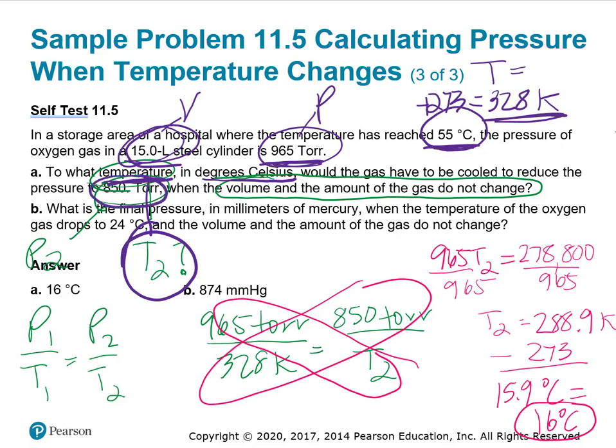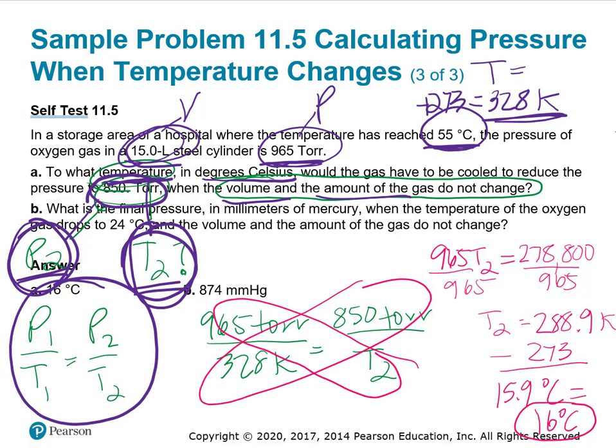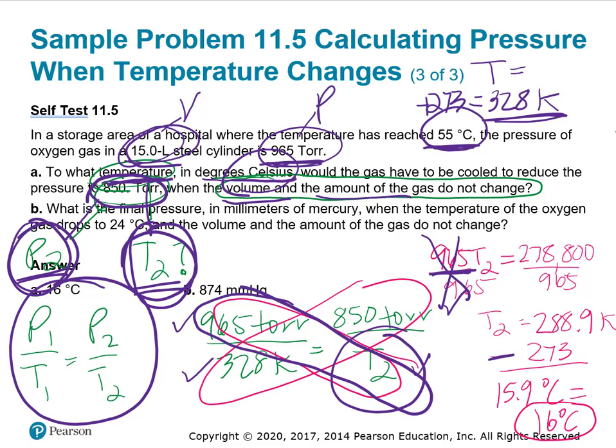To what temperature in degrees Celsius would the gas have to be cooled, so we need to find T2, to reduce the pressure to 850 torr? We're given a second pressure and want a second temperature. The volume and amount don't change, so we're looking at pressure and temperature. I'm using P1 over T1 equals P2 over T2. I put in my first pressure and temperature, my second pressure, and cross-multiply. 965 times T2 equals 850 times 328, which is 278,800. Divide both sides by 965, giving T2 of 288.9 Kelvin. It wants Celsius, so I subtracted 273 to get 15.9, which with two sig figs is 16 degrees Celsius.